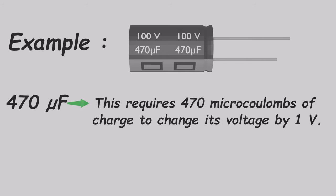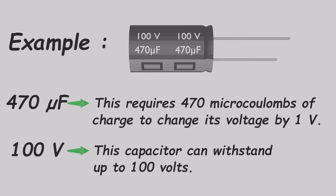This means the capacitor has a capacitance of 470 microfarads. In simple terms, it requires 470 microcoulombs of charge to change its voltage by 1 volt. The voltage rating indicates the maximum voltage the capacitor can handle without getting damaged — in this case, the capacitor can withstand up to 100 volts.